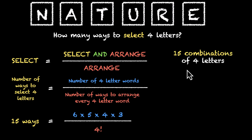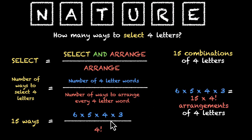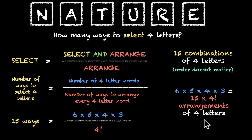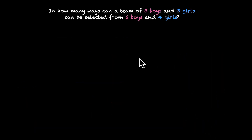So we have 15 ways of selecting four letters out of these six. If you're actually forming words, that can be done in 6 × 5 × 4 × 3, or 15 times four factorial — the number of ways to arrange every combination — and that gives us the total number of four-letter words we can form using these six letters. When we're just selecting, order does not matter; when we're arranging as well, order does matter. Now let's get back to our problem.